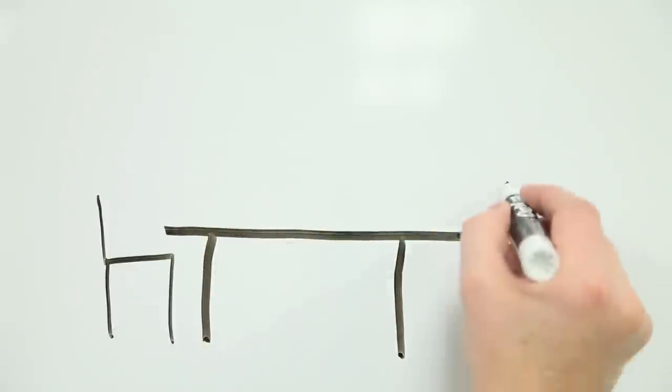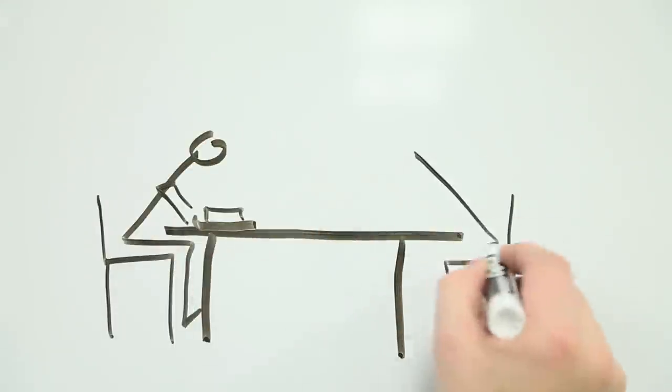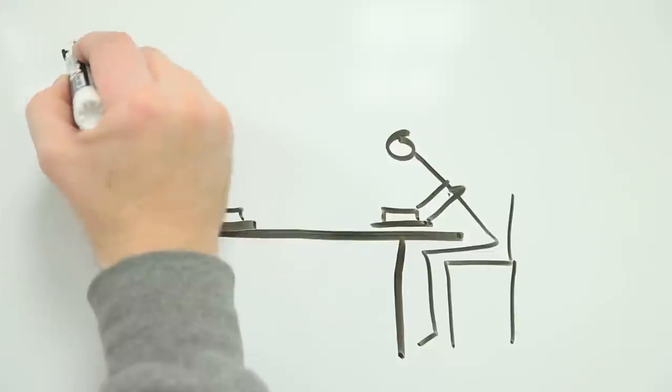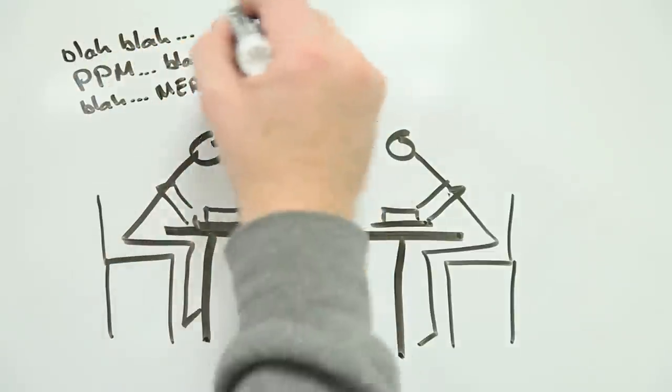Imagine you're eating a juicy swordfish steak and your friend tells you it contains one part per million of the metal mercury. What does that mean?